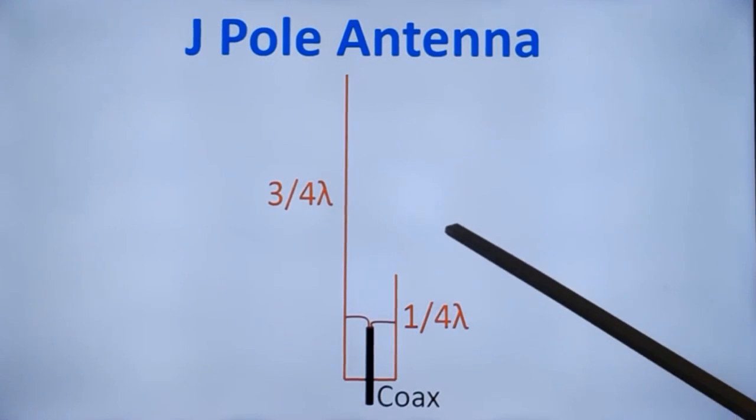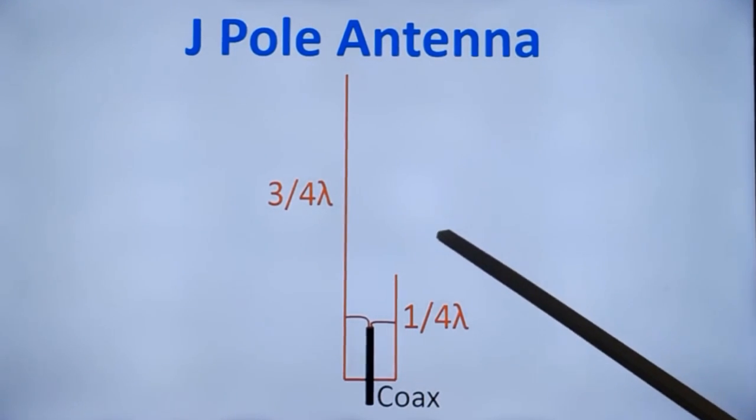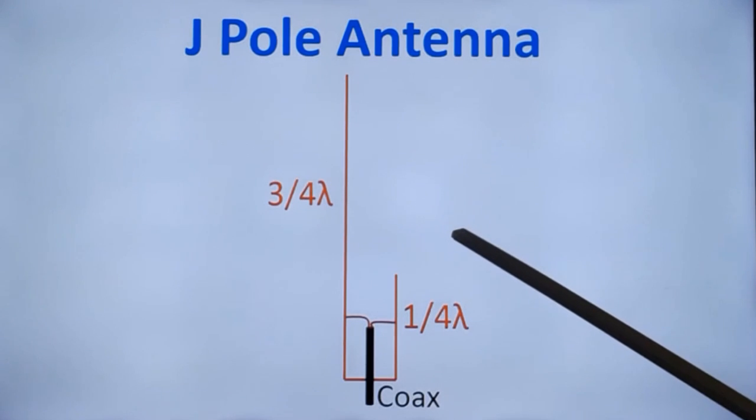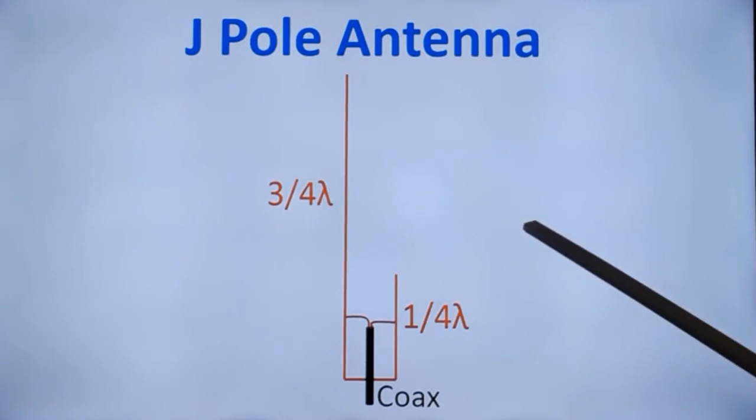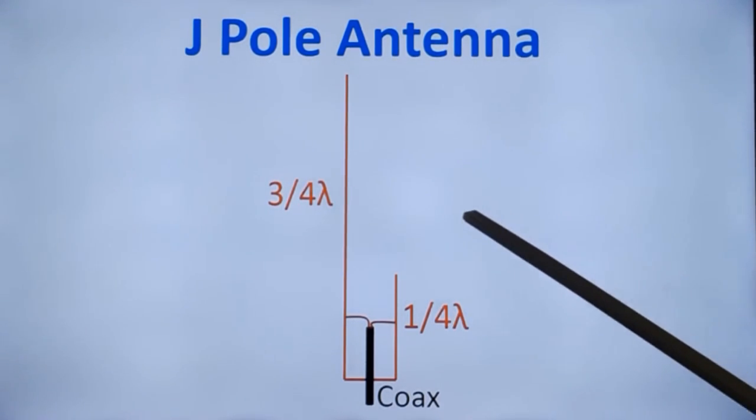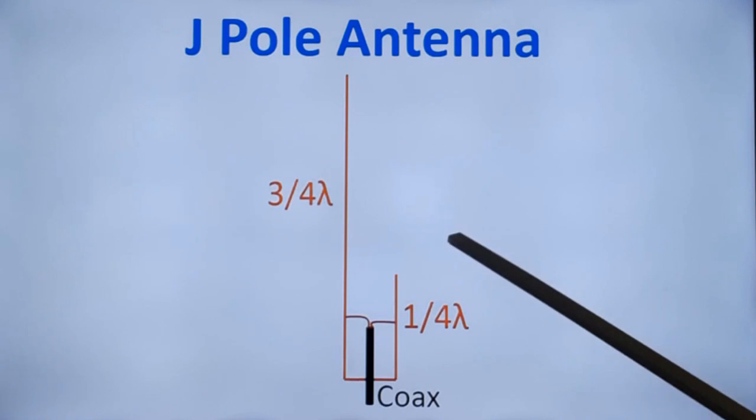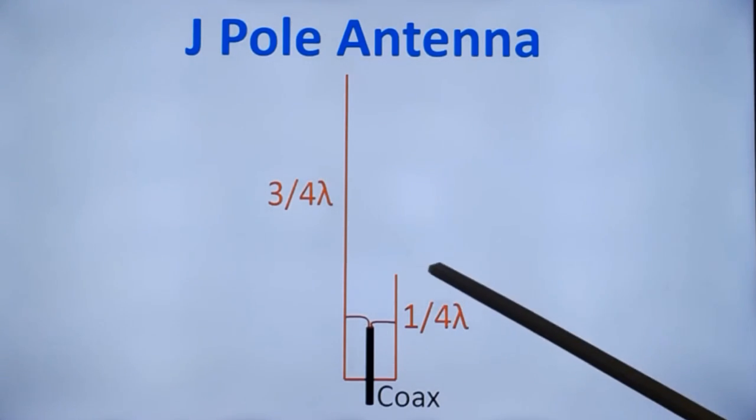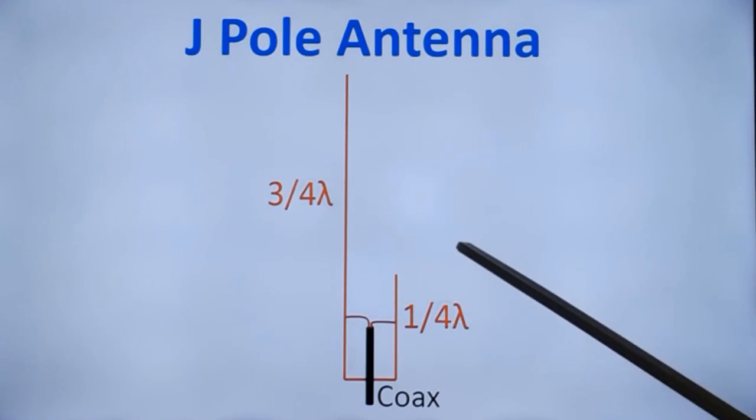You know that International Space Station and many other satellites have VU transponders with uplink on VHF and downlink on UHF. So if a single antenna works for both, that's convenient for the operator.